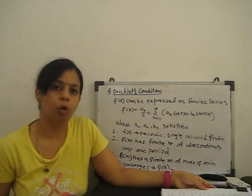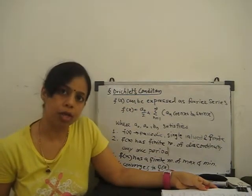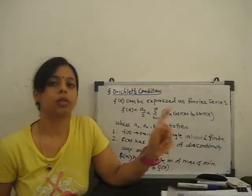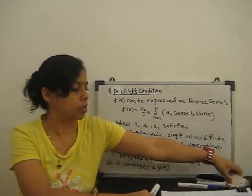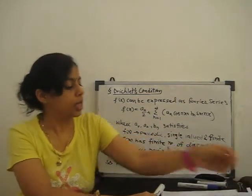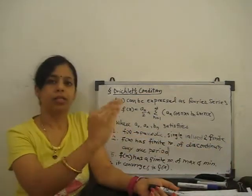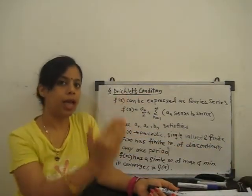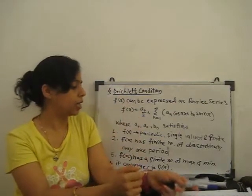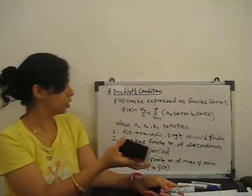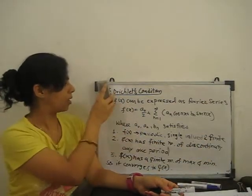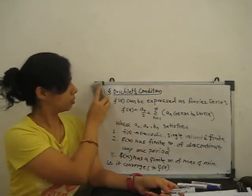Next we go for the Fourier series for discontinuous functions. Discontinuous means if the function breaks at any point, then how do we find the Fourier series for that?